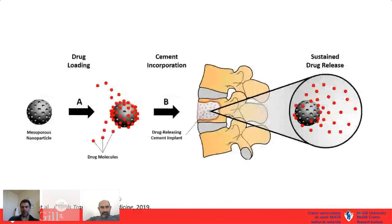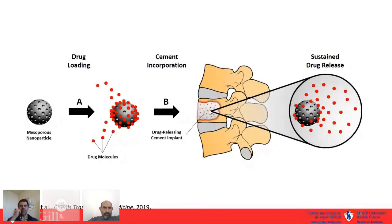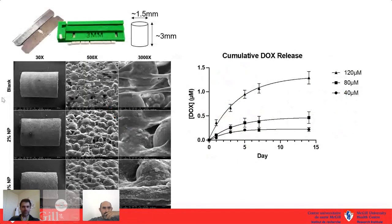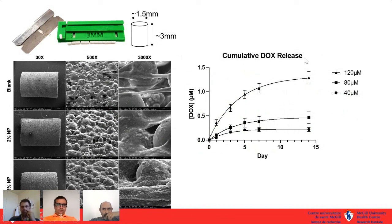We're also working on mesoporous silica nanoparticles for drug uptake and delivery, to be incorporated into polymethyl methacrylate cements — the standard material for closing large bony defects in the spine. This addresses the fact that systemic chemotherapy doesn't reach spine sites well. A master's student is mixing different concentrations of silicon nanoparticles — 2% and 8% — into cement, creating a rough surface visible under close inspection. We can actively measure doxorubicin release over time from the cement, and small 3mm cement pods release enough drug over 4–7 days to block growth of both breast cancer and prostate cancer cell lines.